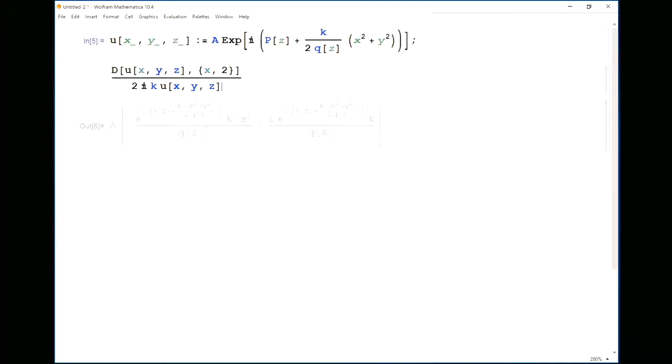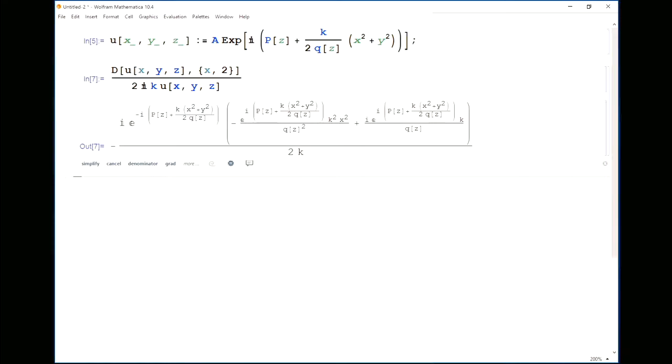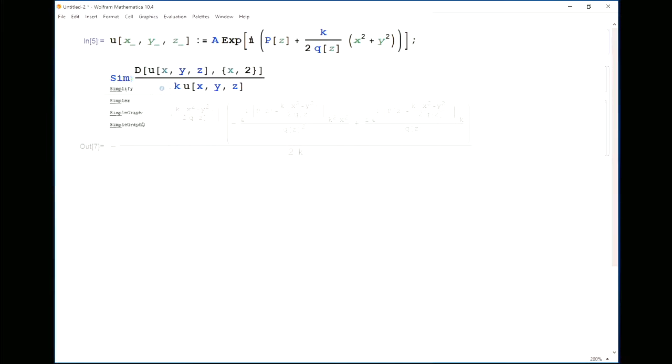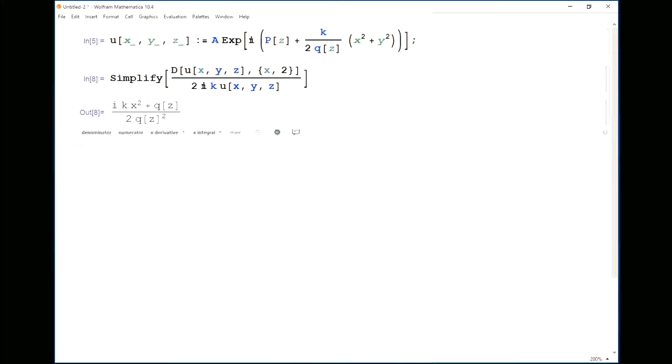Gentlemen, have you got something to add in the back? OK. This still doesn't look super helpful. So let's simplify it. Much simpler. So that's the second order derivative of u with respect to x. And we've taken out a common factor of 2i k times u.